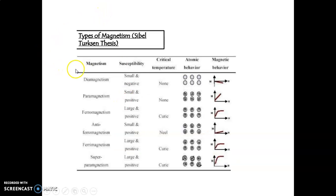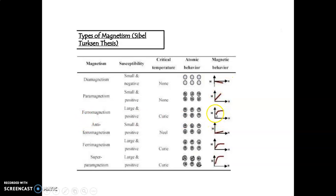Here, the types of magnetism. Diamagnetism will show magnetic behavior with the arrow in the downward direction. Then paramagnetism — it will be a slope above zero, and we are getting a curved line. Similarly, up to superparamagnetism, it is showing the magnetic behavior.